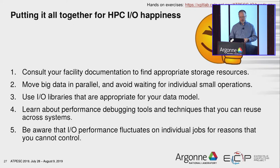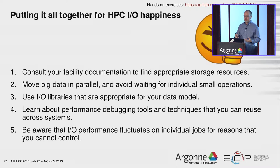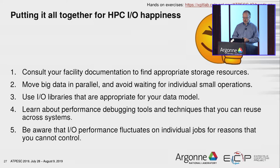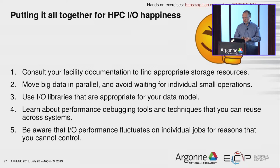To recap the key points about high performance I/O: above all, look at your facility's documentation — not just general software docs, but documentation about what their specific system is like. When you can, move big data in parallel: involve as many processes as you can, involve as much storage as you can, get things going concurrently, and try not to have all your processes wait while one little piece of data is being moved. Use libraries that are appropriate for your data model — they hide complexity and provide performance portability across platforms. Learn some performance debugging basics. And just be aware that performance fluctuates; don't be alarmed, you can mitigate it a little but it will always be there.